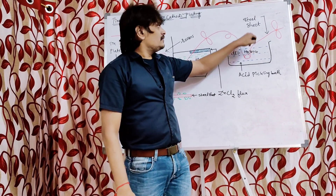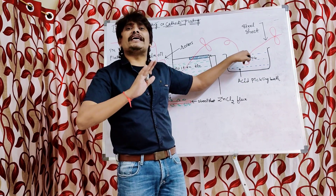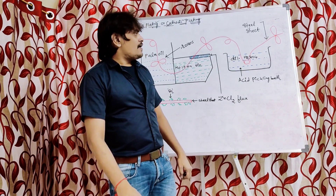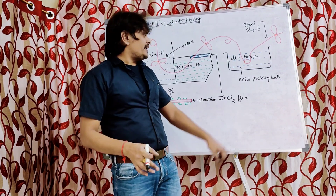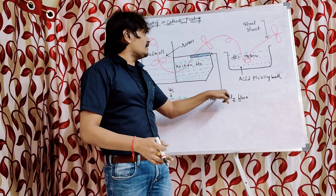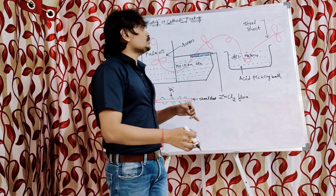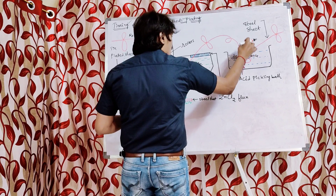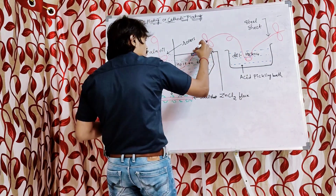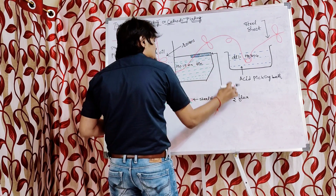Whatever the steel sheet coming out from the acid bath of dilute sulfuric acid is now free of all impurities such as scales, greasy material, dirt, and dust particles. This clean steel sheet should then be passed into the hot molten tin through the zinc chloride flux. The hot molten tin is covered with the zinc chloride flux.